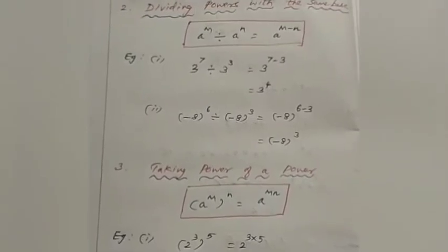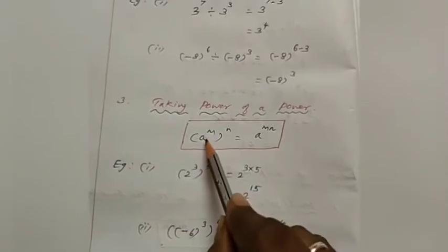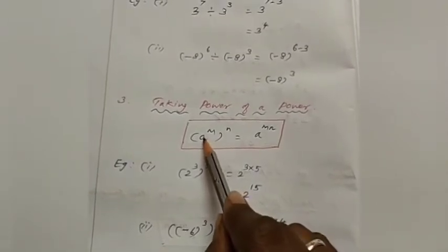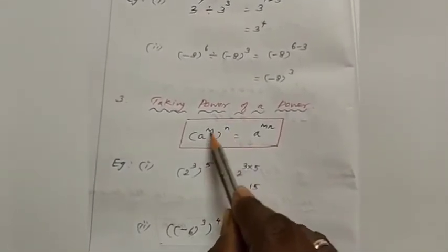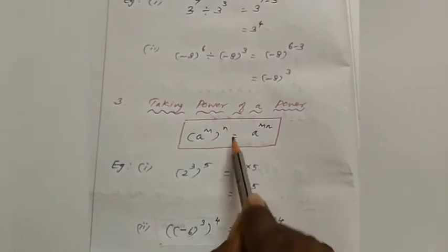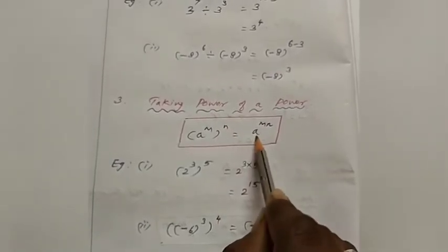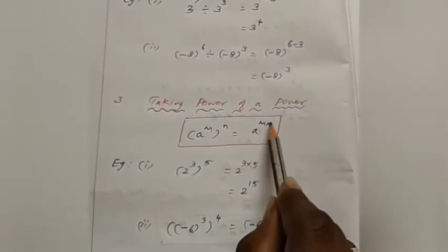The third law is taking power of a power. The formula is: a power m, the whole power n, is equal to a power m into n.